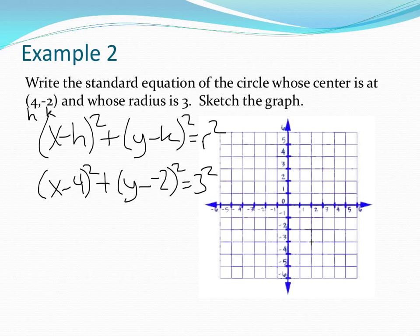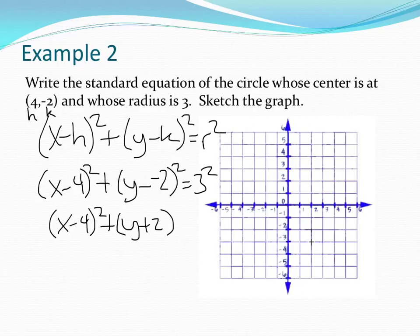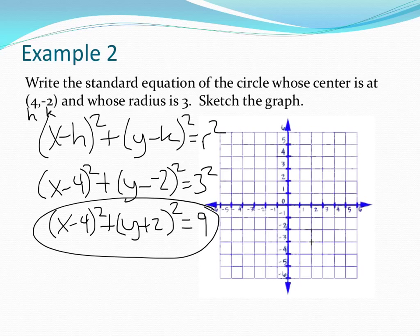Now let's do a little bit of cleaning up here. We have x minus 4 squared, that looks good, plus y minus negative 2, that's y plus 2, squared equals 3 squared, which is 9. Here is my equation, my standard equation.